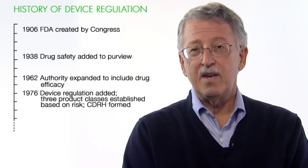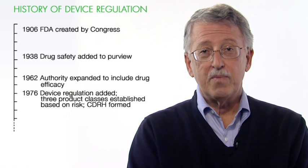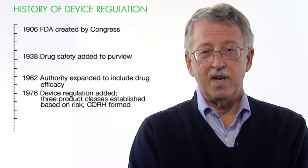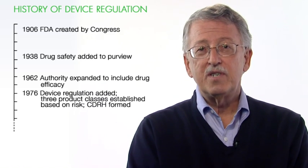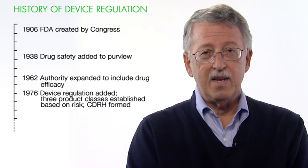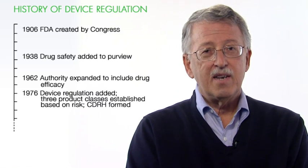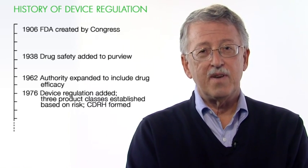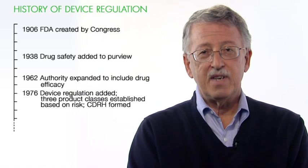Congress created FDA in 1906 to deal with problems in the food industry — safety issues and the safety of the food supply in the United States. Originally, the agency had very limited authority over any products. But in 1938, there were a number of deaths that caused Congress to give FDA more authority with respect to drug safety.